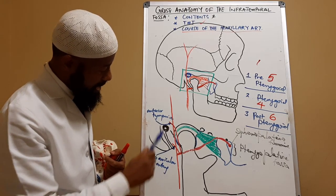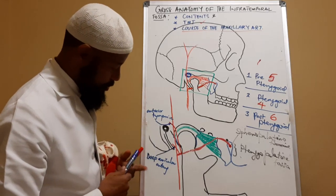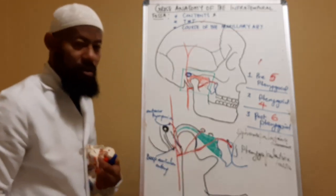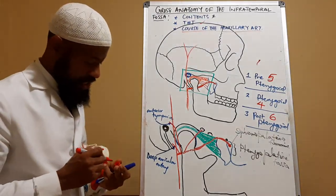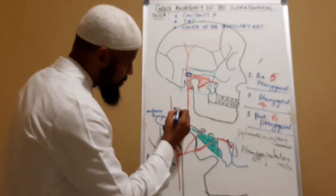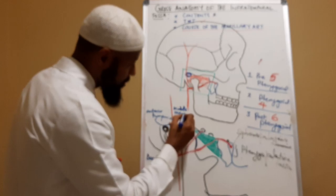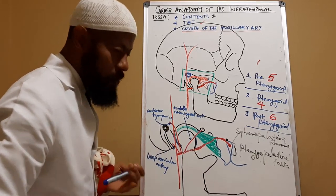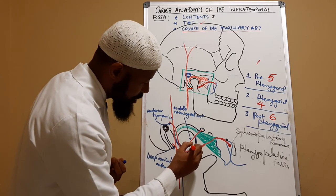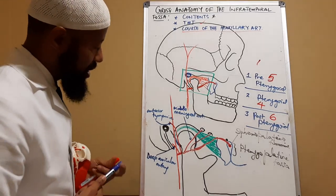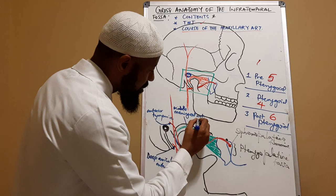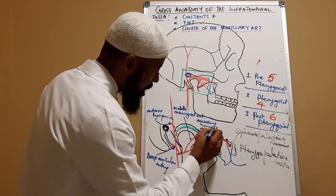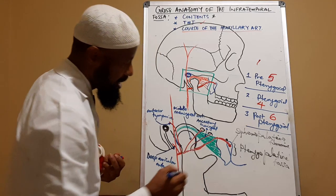The first branch of the first part is the deep auricular artery, and then we have the anterior tympanic artery. Then we have the middle meningeal artery, which runs all the way going into the foramen spinosum. And we have the accessory meningeal artery, which passes through the foramen ovale.